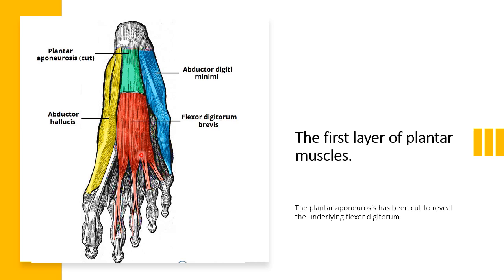Flexor digitorum brevis lies between the plantar aponeurosis and the tendons of flexor digitorum longus. The origin is the medial tubercle of the calcaneum and plantar aponeurosis. It attaches to the middle phalanx of the lateral four digits. The action is to flex the lateral four digits at the proximal interphalangeal joint. Nerve supply is the medial plantar nerve.